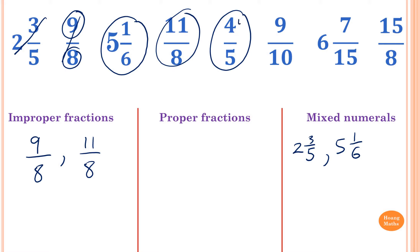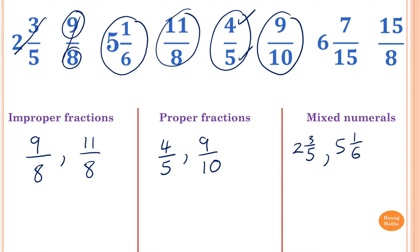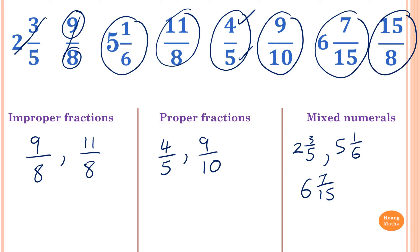4 fifths — the numerator is smaller than the denominator, so it's a proper fraction. 9 over 10 — 9 is less than 10, so it's a proper fraction. 6 and 7 over 15 is a mixed numeral. And 15 over 8 — 15 is larger than 8, so that is an improper fraction.